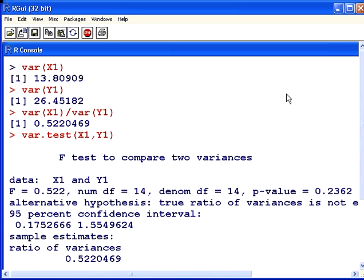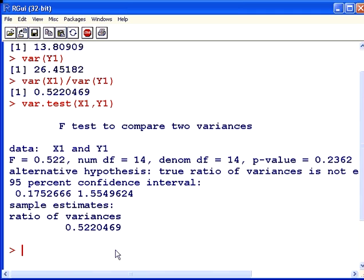I'm going to scroll down. Here we have the ratio again, the ratio of variances. We have a 95% confidence interval for this ratio. And also up here, we have the p-value. You notice we have a high p-value.